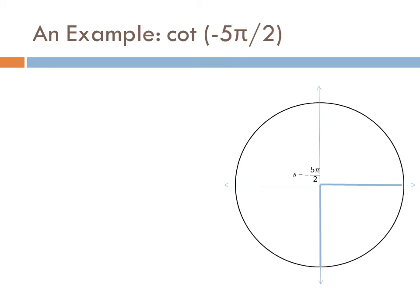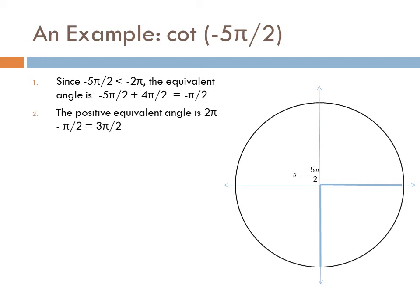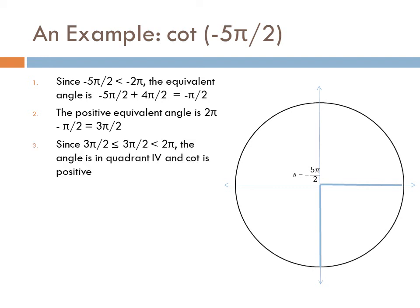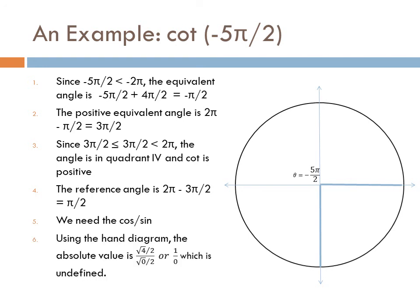Let's look at our final example: the cotangent of negative 5 pi over 2. We're greater than negative 2 pi, so we have an extra rotation to remove, leaving us with negative pi over 2. Converting to the positive equivalent gives us 3 pi over 2. We are at the boundary between quadrant 3 and quadrant 4, so the cotangent is going to be positive. The reference angle is pi over 2, and we need cosine over sine. Using the hand diagram, we get √4/2 divided by √0/2, which is 1 over 0 — undefined. It's not unusual for tangent and cotangent to be undefined.